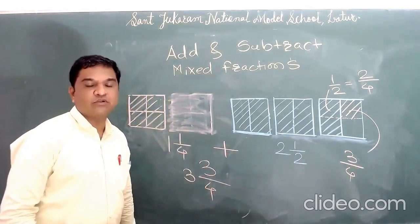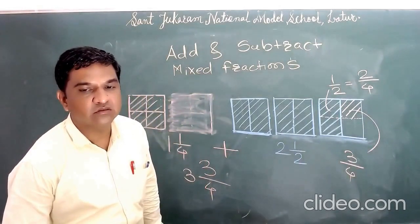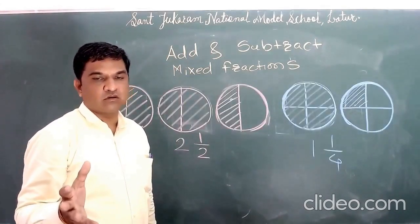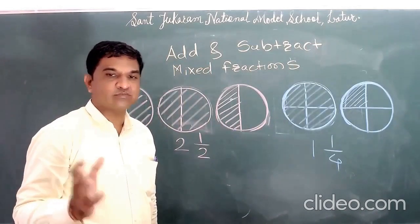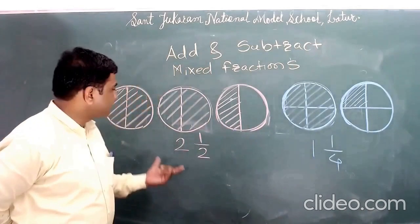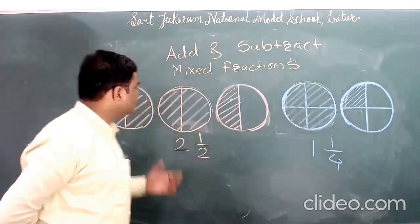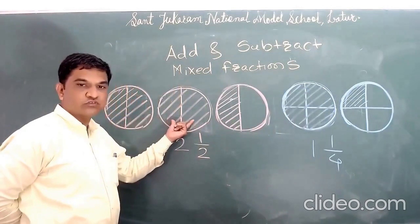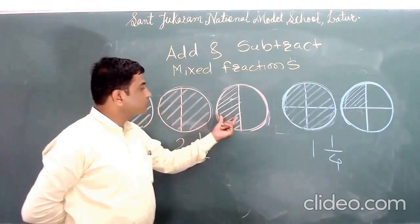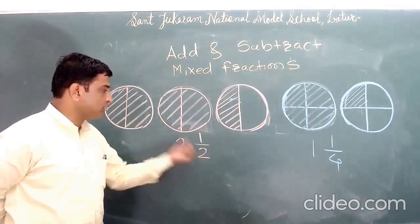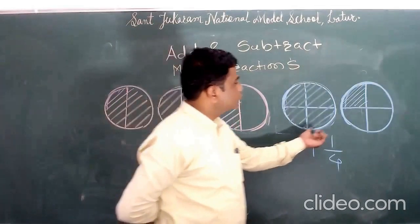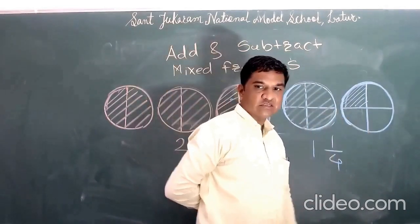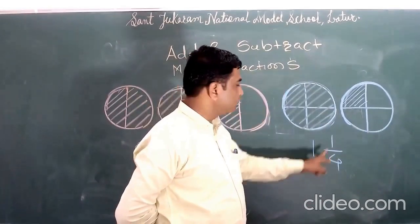Now we will see one more example — the subtraction of mixed fractions using this graphical method. We have five circles of equal size. The first three circles are shaded in pink: the first two circles are completely shaded and the third circle is shaded in half, so the fraction is two and a half. The last two circles: one complete circle is shaded with blue and one-fourth of the next circle is shaded with blue, so that fraction is one whole one-by-four.